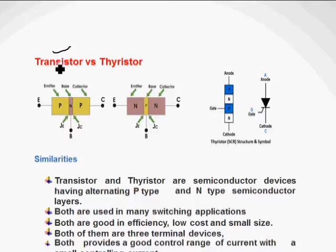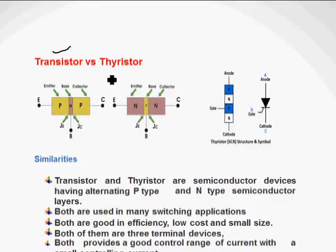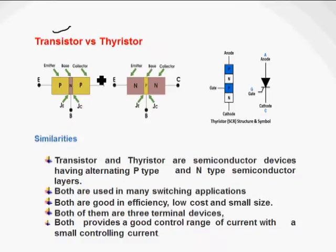Transistor and thyristor, both are made up from two words. Transistor means transfer resistance and thyristor means thyratron and transistors. Actually, both are semiconductor devices and both are having P and N layers.